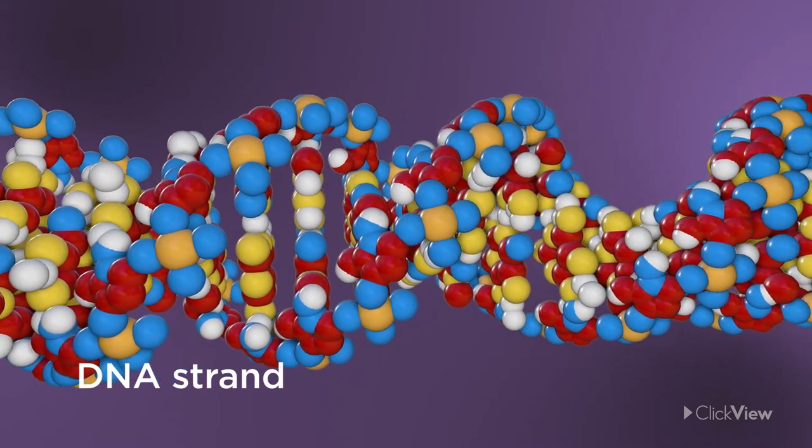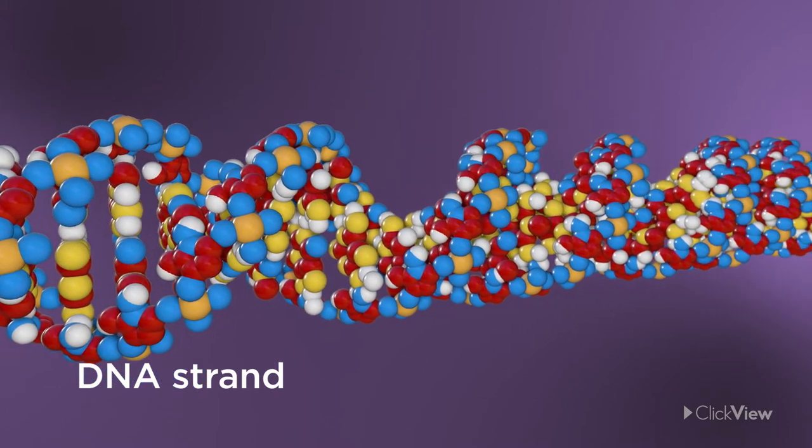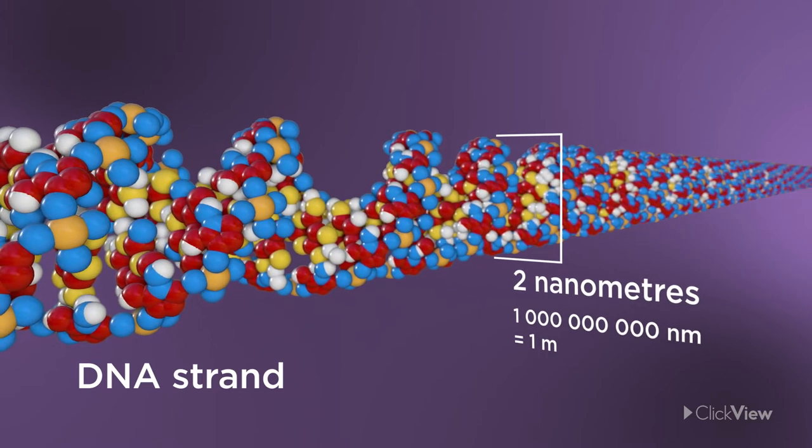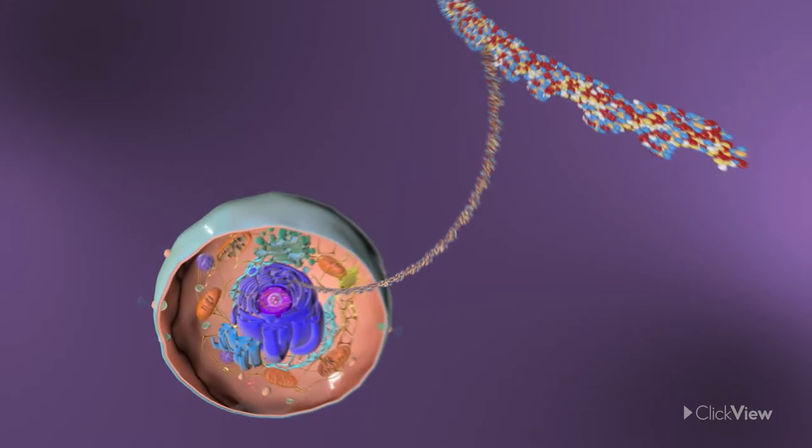Even very large molecules such as a double helix strand of DNA barely reach a couple of nanometres in width. And this means that several metres of genetic material can be crammed into a single tiny cell.